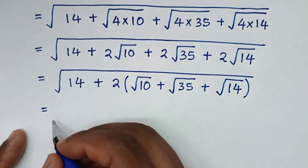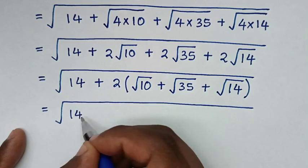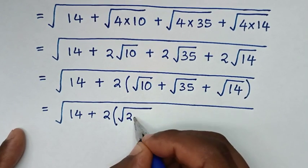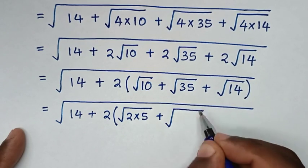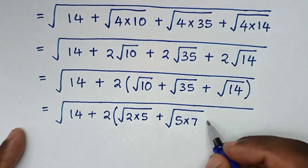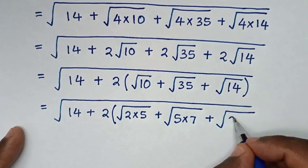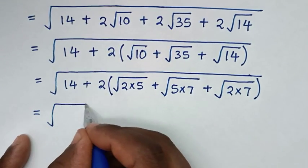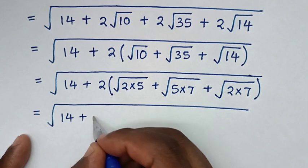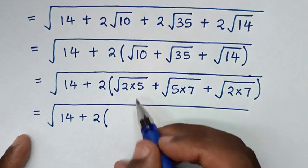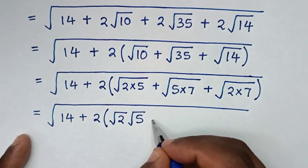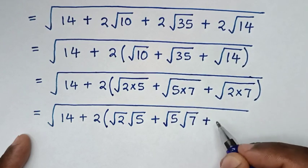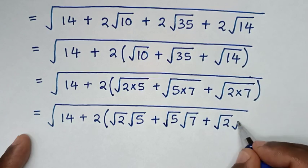Then in the next step it will be equal to square root of 14, then plus 2 bracket. We separate: square root of 10 is the same as square root of 2 times square root of 5, then plus square root of 35 is square root of 5 times square root of 7, then plus square root of 14 is square root of 2 times square root of 7, bracket.